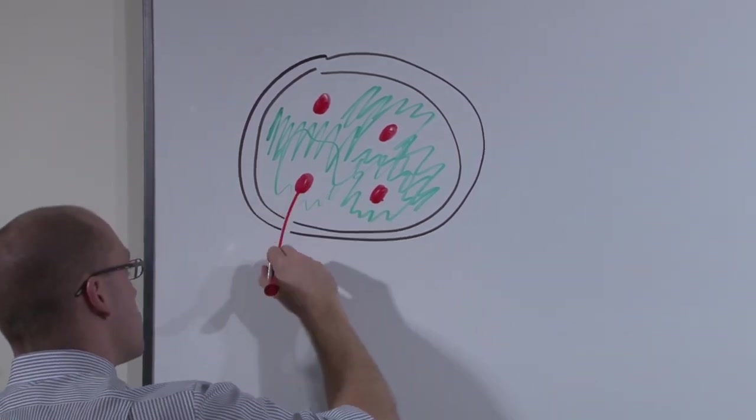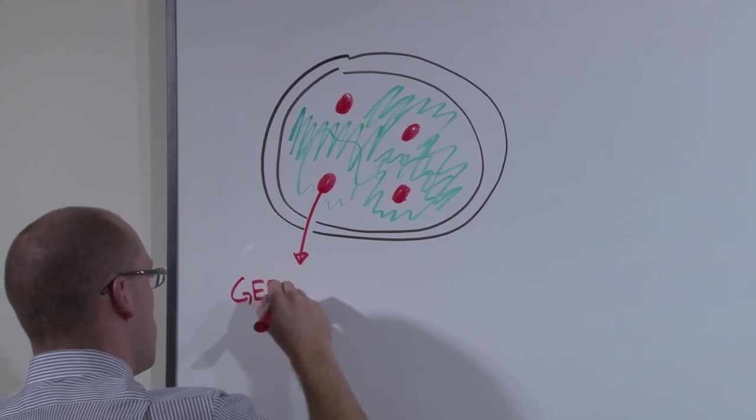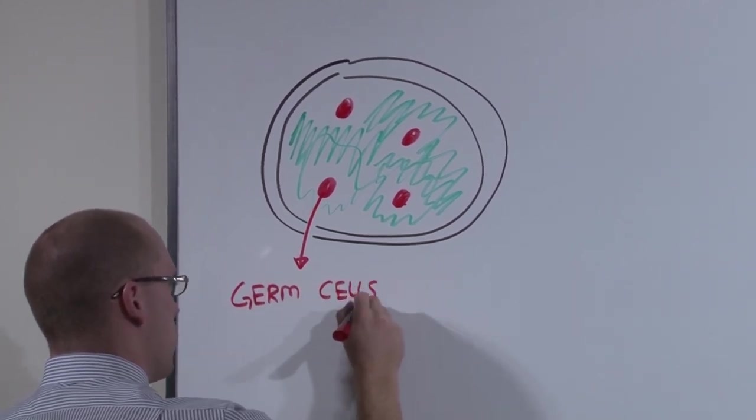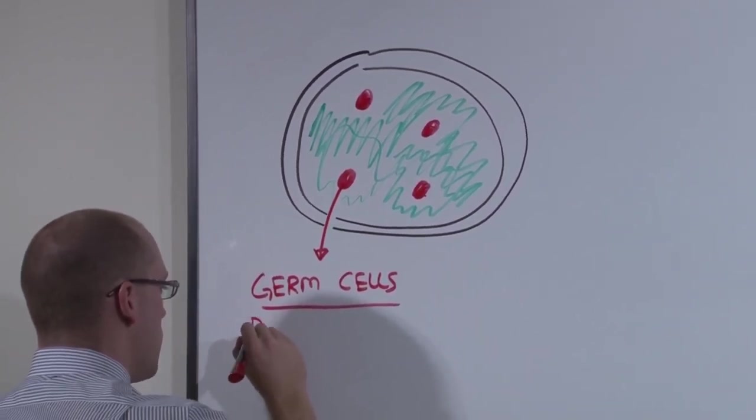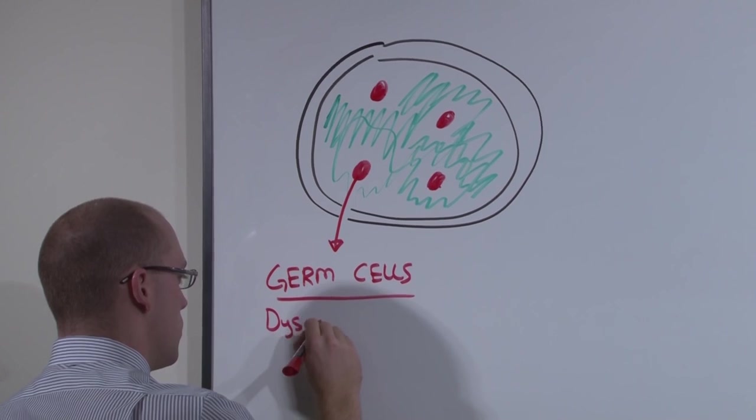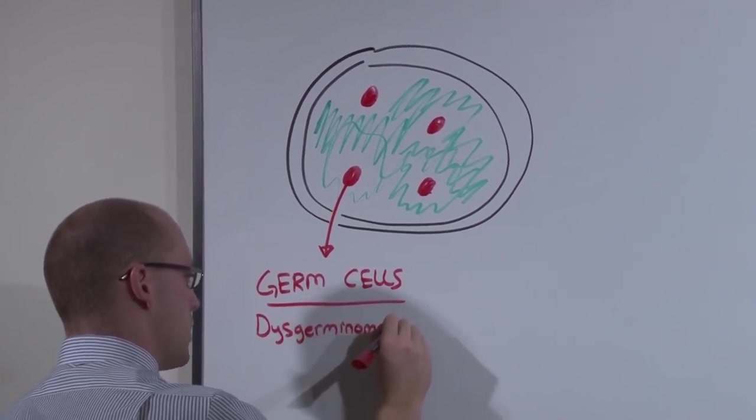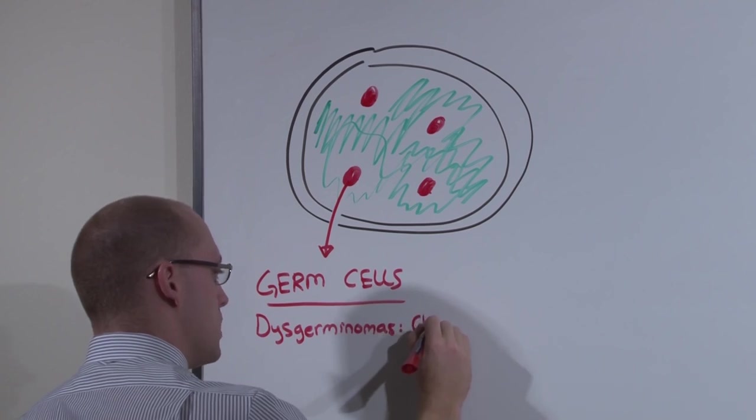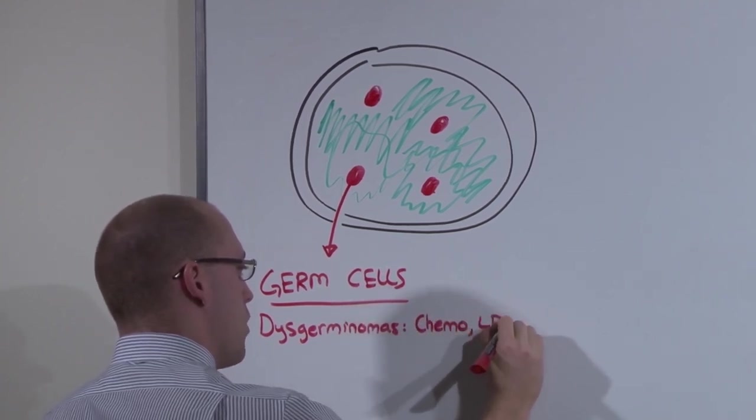First, the germ cells actually have a pretty good prognosis. They come in a couple of forms. The dysgerminomas are the seminomas of testicular cancer. They are exquisitely sensitive to chemotherapy, and they can be tracked with an LDH.